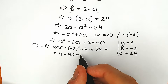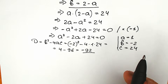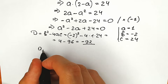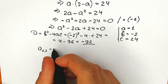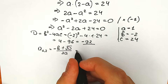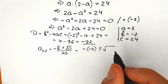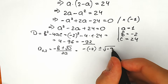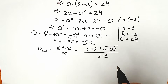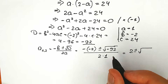Our discriminant is negative — we get minus 92 — but that doesn't matter. We're going to find our roots using the well-known quadratic formula: a₁ and a₂ equal to minus b plus or minus square root of the discriminant, all over 2a. So we have minus(minus 2) plus or minus square root of minus 92, divided by 2 times 1.